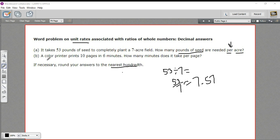Let's try part B. It says a color printer prints 10 pages in 6 minutes. How many minutes does it take per page? So minutes per page - that means minutes divided by page. Well, there are 6 minutes, there are 10 pages, so it takes 0.6 minutes per page.